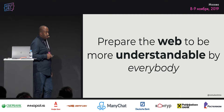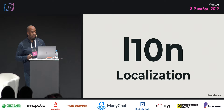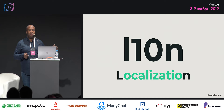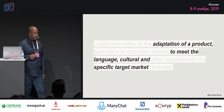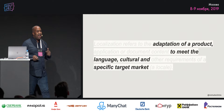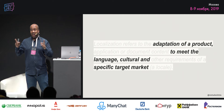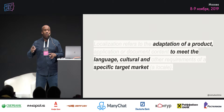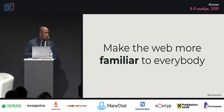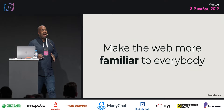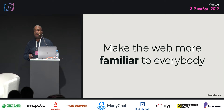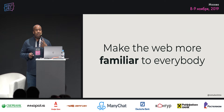We have L-10N. Localization. Ten characters between the first and the end. Localization is to adapt your product to meet the language and the specific cultural target. It's not just translating hello to Privet. It's also making it a little bit more understandable with the currency, with the decimal signs, with everything that makes your software more familiar. We need to make not just pure translation — we need to make your content familiar to everybody.